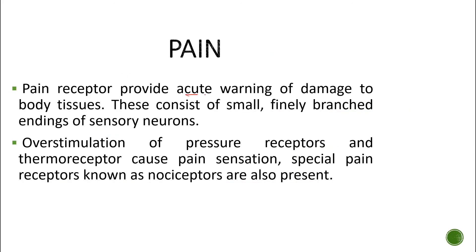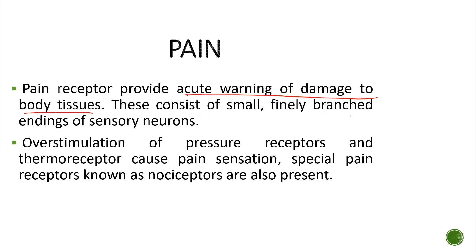Pain receptors provide an acute warning of damage to body tissues. They consist of small, branched free nerve endings. Over-stimulation of pressure receptors and thermoreceptors can cause pain sensations. Special pain receptors known as nociceptors are also present. Pain receptors are very important — without them, you could have a cut and be bleeding without knowing it, which can be very dangerous.